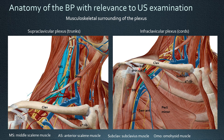You can see here in the infraclavicular region the pectoralis minor muscle originating from the coracoid process, dividing the plexus into the axillary and the infraclavicular region.